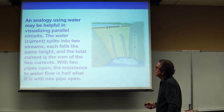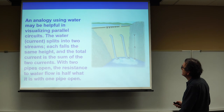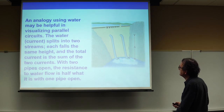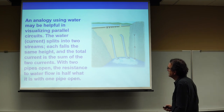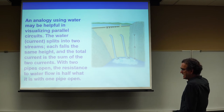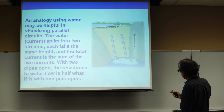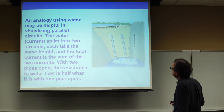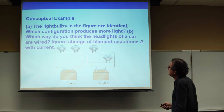The analogy with water can be helpful in visualizing circuits. The water current splits into two streams, each falling at the same height, and the total current is the sum of the two. With two pipes open, the resistance to water flow is half what it is with one pipe open, because we have twice the flow. And twice the flow with the same pressure means the net resistance has gone down.